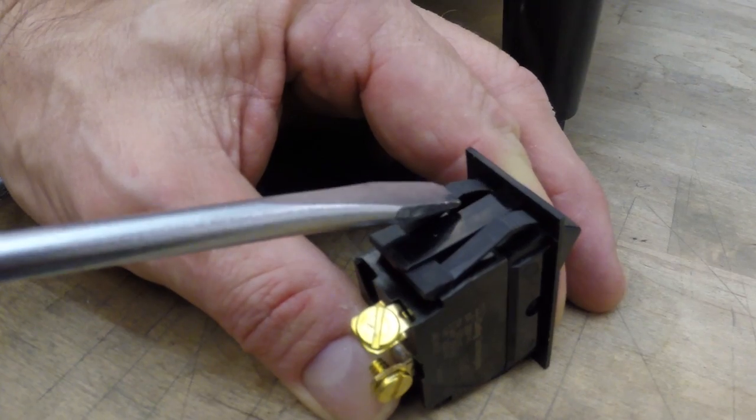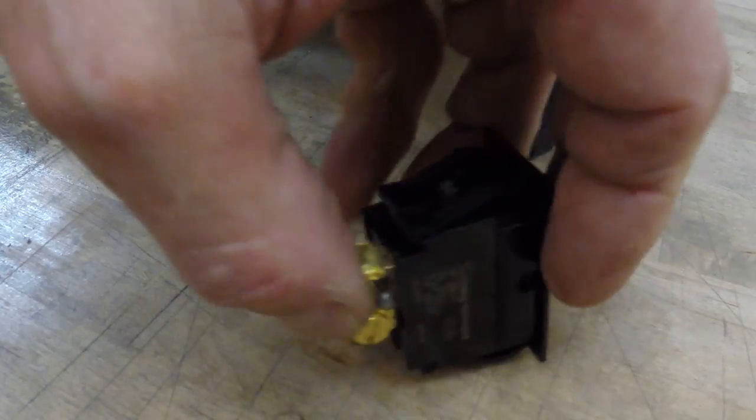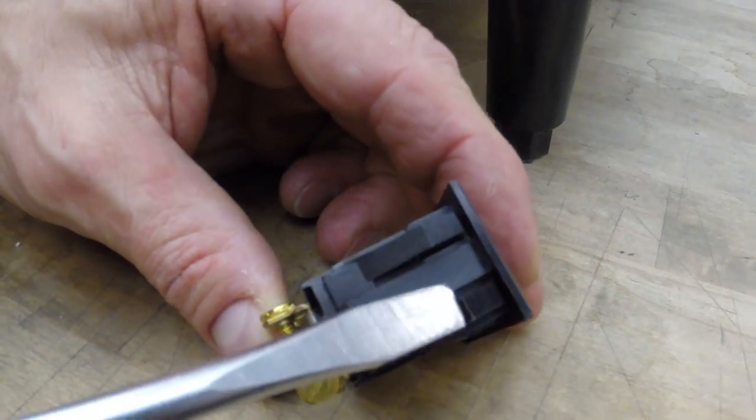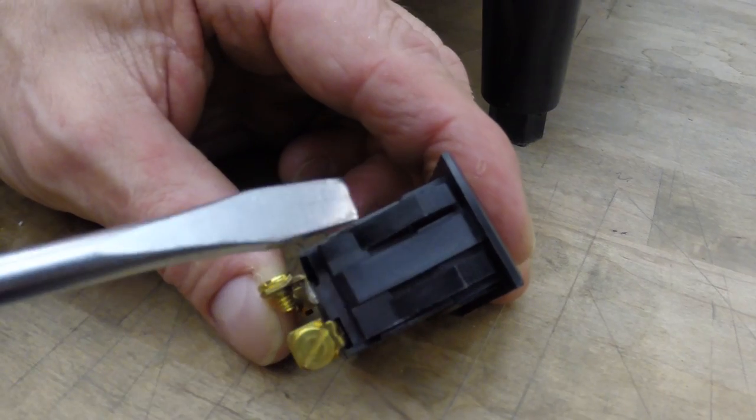It is important to know that the rocker switch has four plastic retaining clips which need to be depressed in order to remove the old switch. Using the screwdriver, depress one retaining clip at a time while gently pushing each corner out.